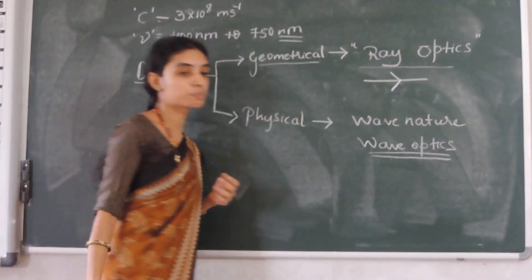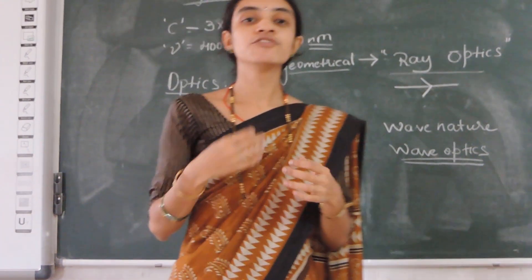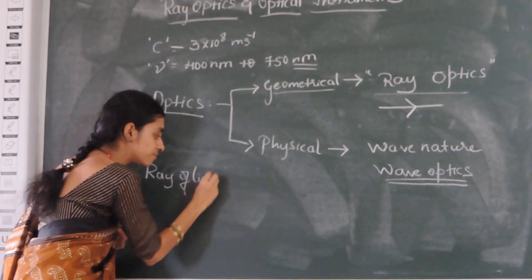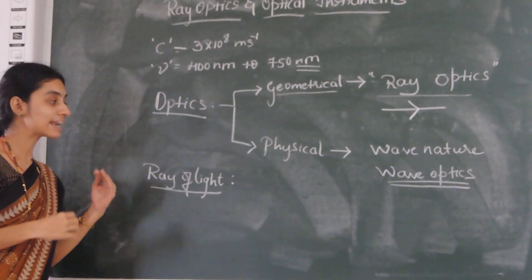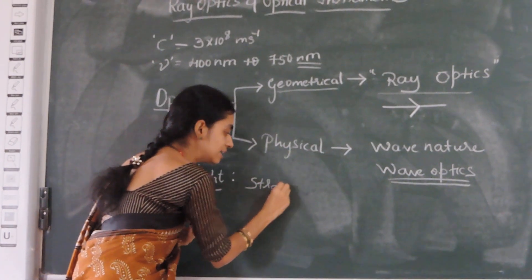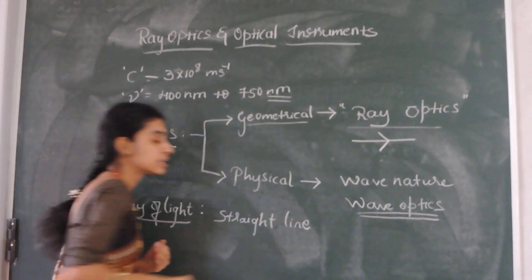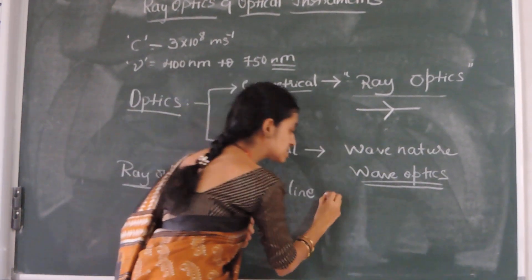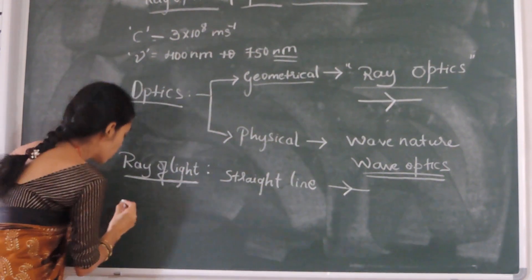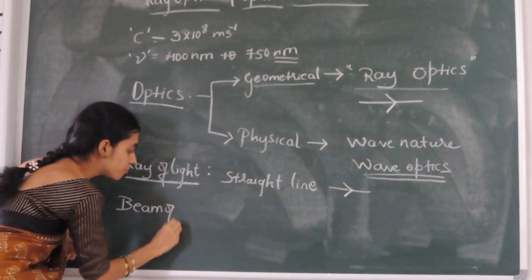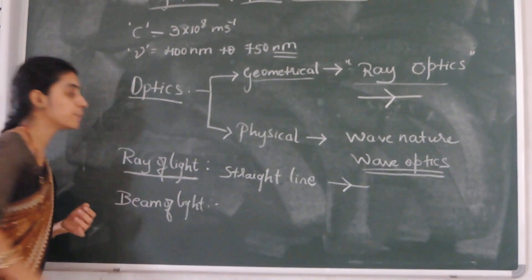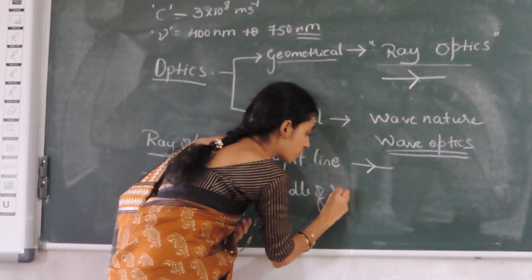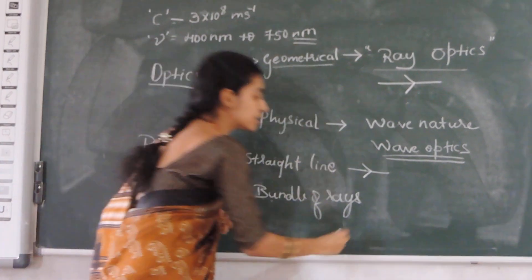Ray of light: light travels in a straight line path, so we say ray of light for a single ray. If there are a large number of rays, we call it a beam of light — that is, a bundle of rays.